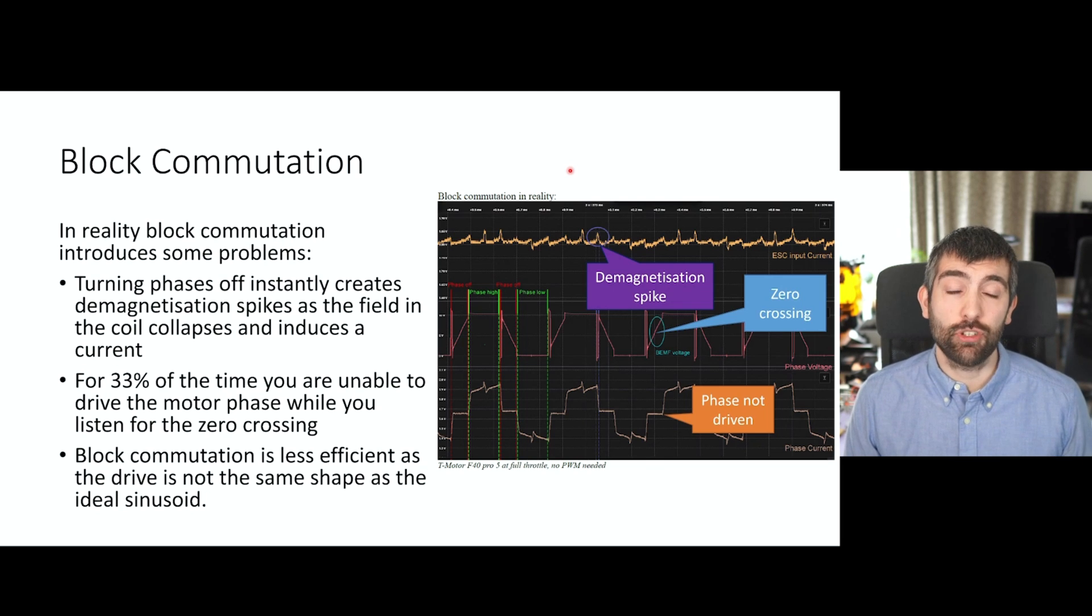In reality, block commutation like this introduces some problems. Firstly, turning the phase on and off very quickly introduces spikes because you've got fields in the coils being created and destroyed very rapidly, and whenever you've got a field collapsing quickly you get a spike in current. And you can see this on the input current to the ESC. So this is called a demagnetisation spike, it's when the field in the coil is collapsing and the ESC draws more current as a result. The second problem is that 33% of the time you are not driving the phase. So you could be driving the phase a little bit and getting a bit more torque and a bit more power out of the motor, but instead you're not driving the phase and you're listening for the zero crossing on the back EMF voltage. So you're missing some time where you could be putting power into the motor and getting useful work done because you're listening for that zero crossing.